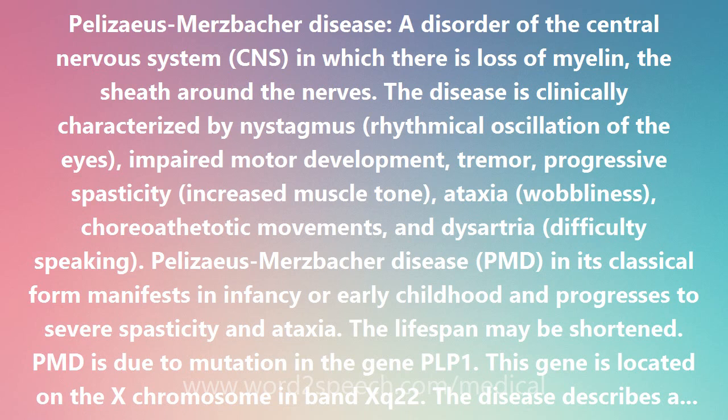The PLP1 gene encodes proteolipid protein (PLP), the most abundant protein of the myelin sheath in the CNS. The mutation in PLP1 in PMD results in loss of myelin, which in turn causes the neurological abnormalities. The severity of myelin loss is dependent on the particular PLP1 mutation and can range from early lethal forms of PMD to a mild disorder known as spastic paraplegia type 2 (SPG2).